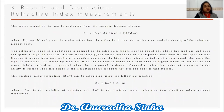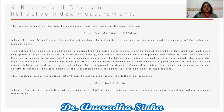Coming to the refractive index measurement: the molar refraction R_m is evaluated from the Lorentz-Lorenz equation, where R_m, n, M, and ρ are the molar refraction, the refractive index, the molar mass, and the density respectively. The refractive index is defined as the ratio c₀/c, where c is the speed of light in the medium and c₀ is the speed of light in a vacuum. The higher the refractive index of a compound, the more light is refracted. The refractive index is higher when molecules are more tightly packed, i.e., when the compound is denser. The limiting molar refraction R_m⁰ can be calculated from the modality of the solution.